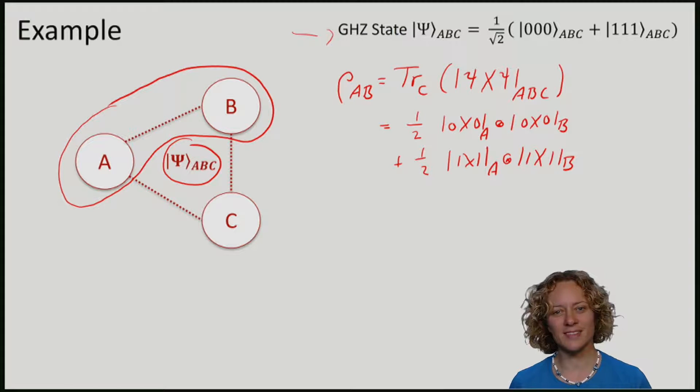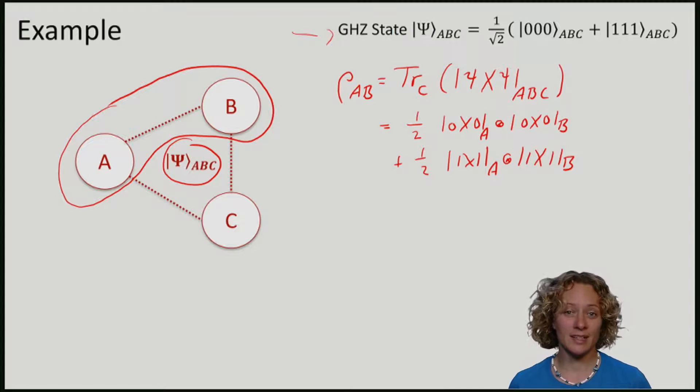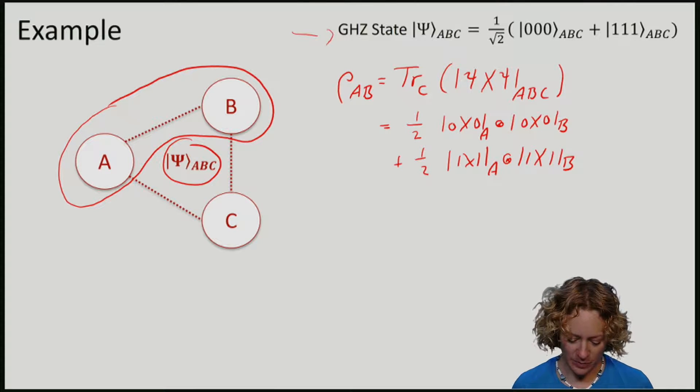We see that if I trace out C, the state on AB is separable between A and B.